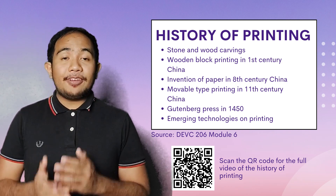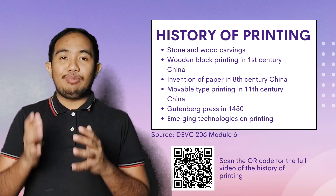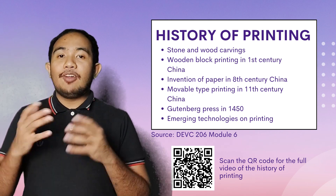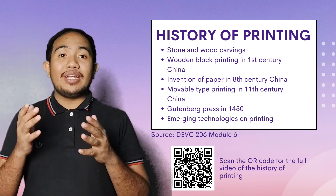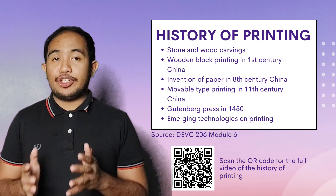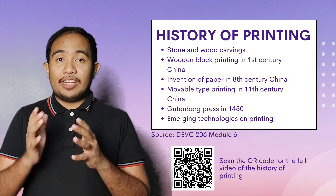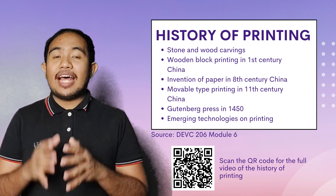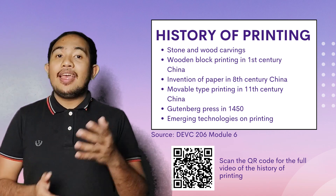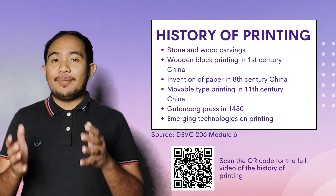In 1450, Johannes Gutenberg's invention of the first printing press using movable metal types revolutionized communication, enabling mass production of information. The mass production of information eventually allowed ideas and information to spread faster and become more accessible to the masses.